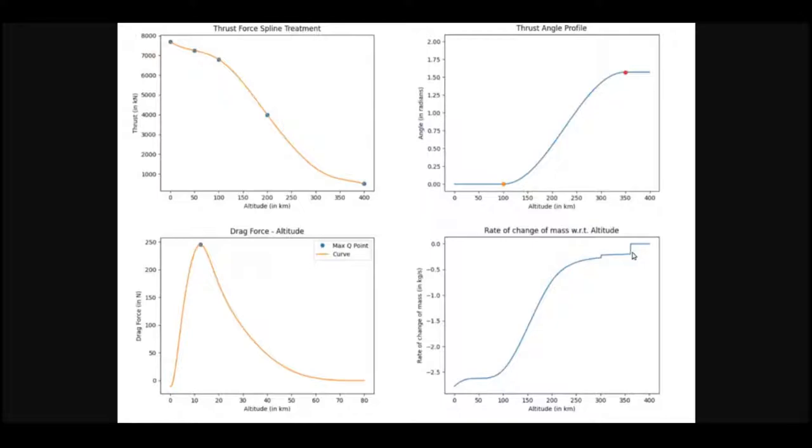Also, after 360 kilometers of altitude, we observed that the change in mass is tending to 0. This is because stage separation is complete and now very few corrections are needed to achieve the required orbit.